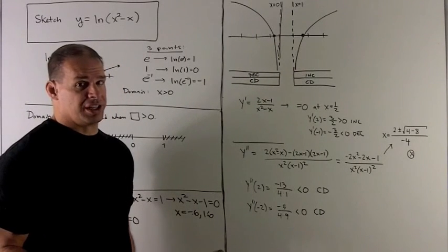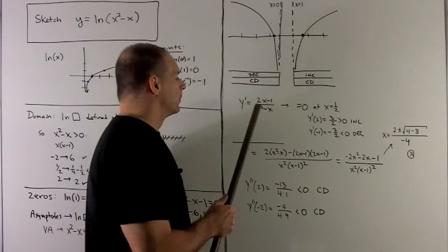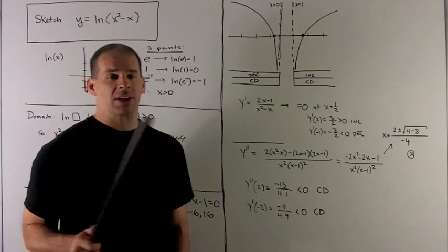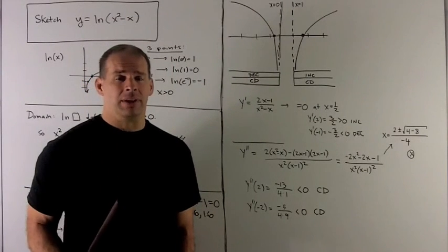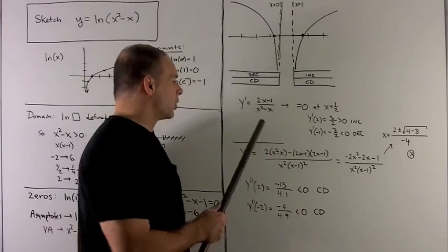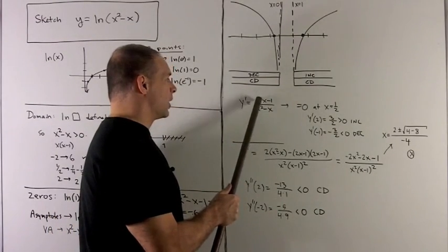Let's take a look at increasing and decreasing. So I calculate the derivative. The rule for y prime is going to be take box, put it in the bottom, and then take the derivative on top of box. So I put my x squared minus x in the bottom. Derivative of the top is 2x minus 1.